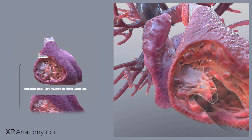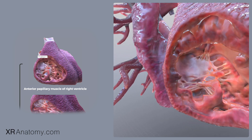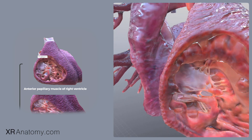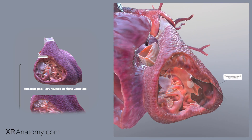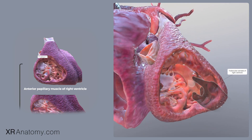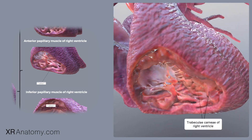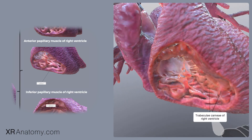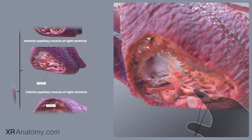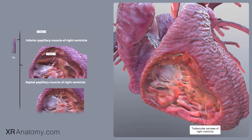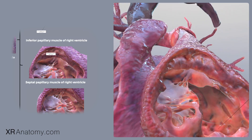The anterior papillary muscle is the largest and most consistent papillary muscle associated with the tricuspid valve. It is supported by a specialized trabeculum and originates from the anterior wall of the ventricle. The inferior or posterior papillary muscle, the second largest, arises from the ventricle's lower section and can vary in structure, sometimes presenting as one or more separate muscles. The septal papillary muscle, often the smallest and most variable, may range from small to non-existent.